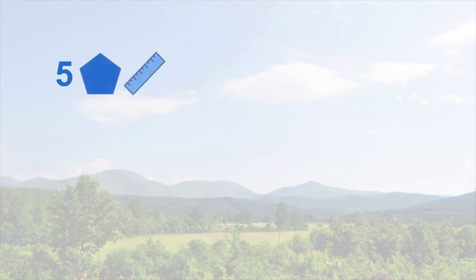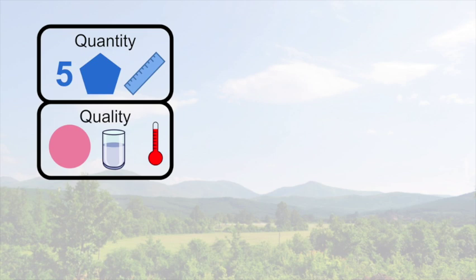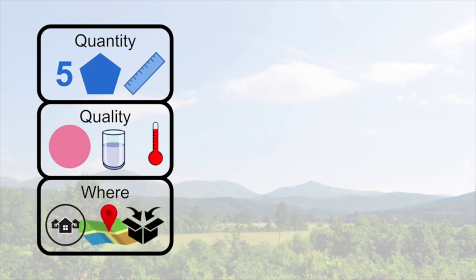But let's back up. Think about the number five, or a shape, or distance—we might categorize those under quantity. Next, we might organize qualities like color, half-full, or temperature. Next, where something is—a place or location—under another category. These are starting to introduce Aristotle's categories.